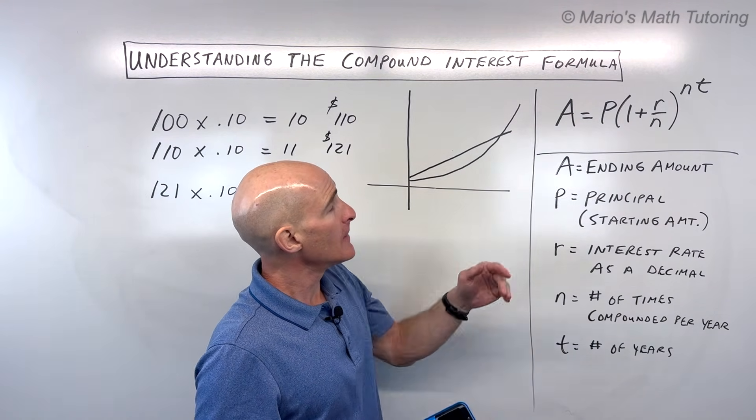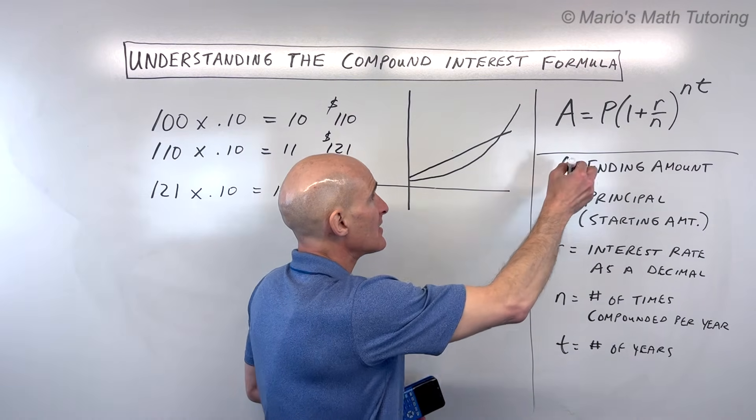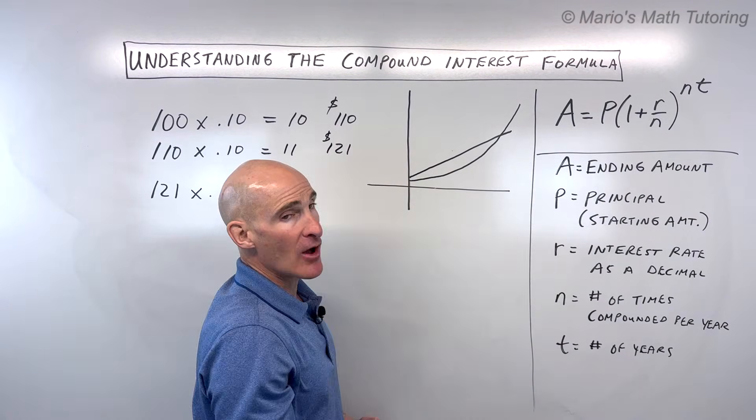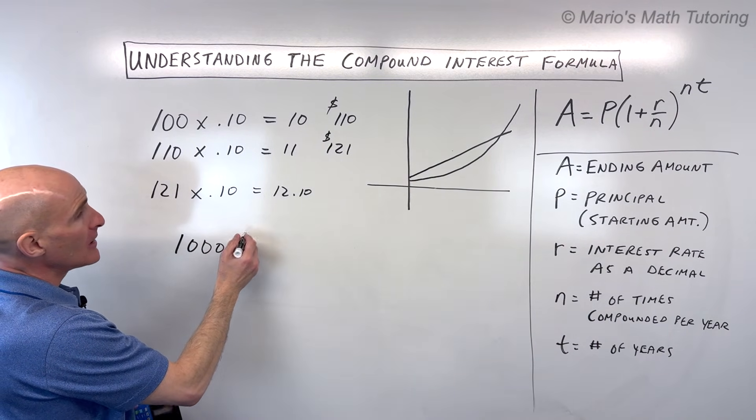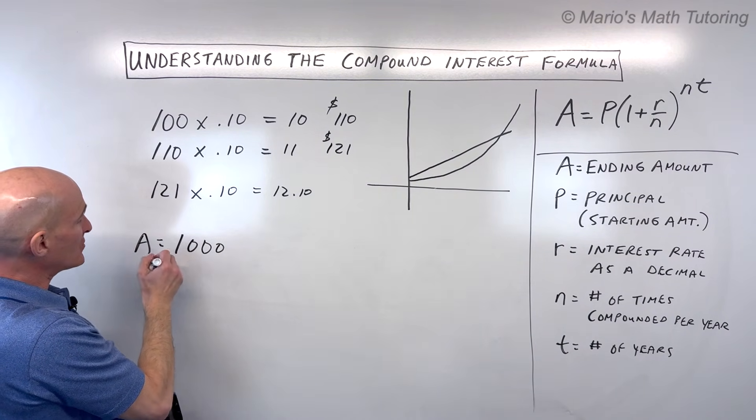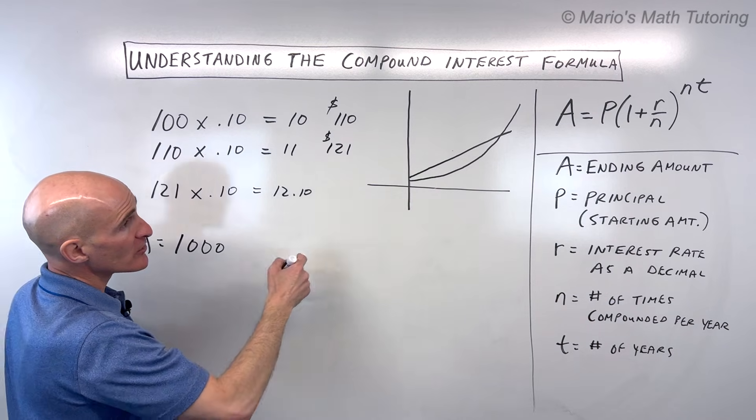How do we work with this formula? We're going to say that P is our principle. That's the starting amount. So let's just say we start with $1,000 this time. A is the ending amount. That's what you end up with. So P is the principle or the starting amount.